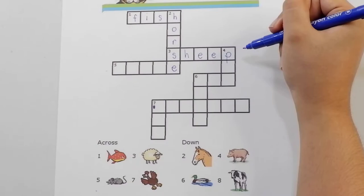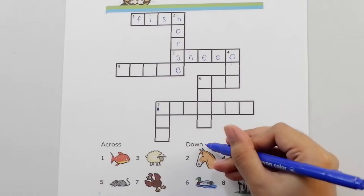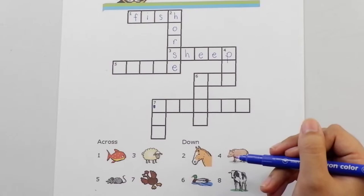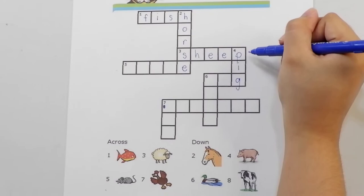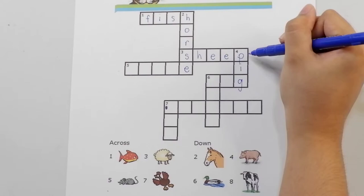How about number four? Number four is under down. That means we have to write the answer vertically going down. Pig. P-I-G for pig. Did you see? Sheep and pig are connected with the letter P.